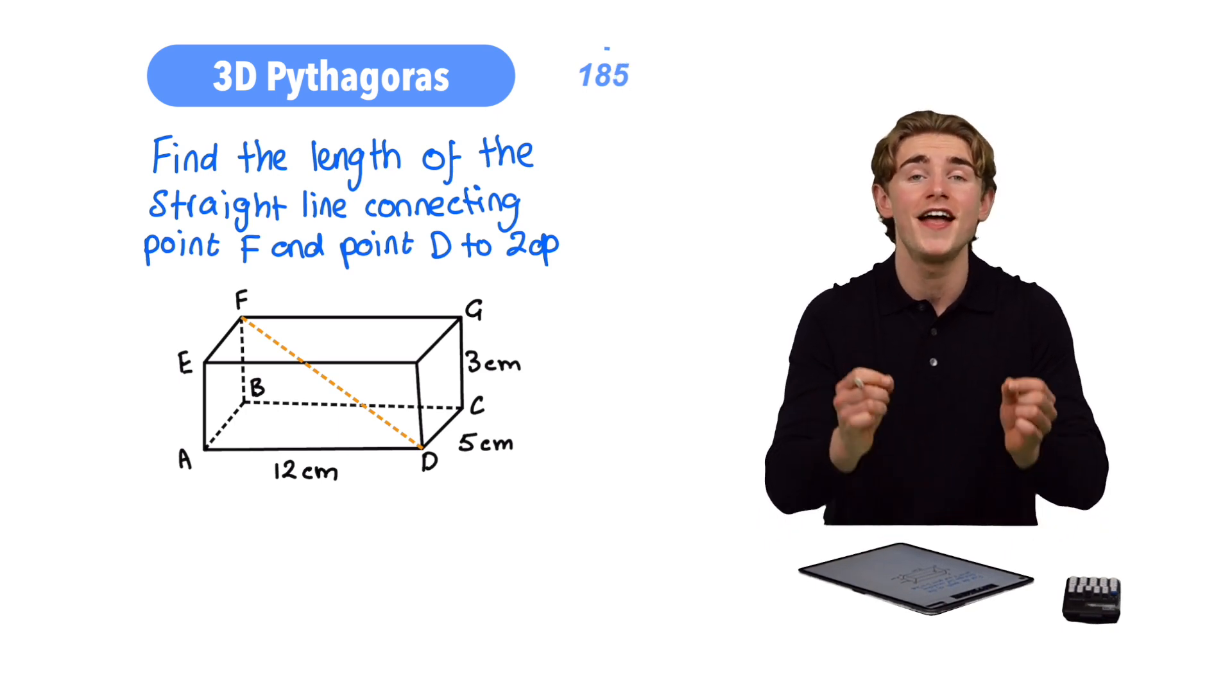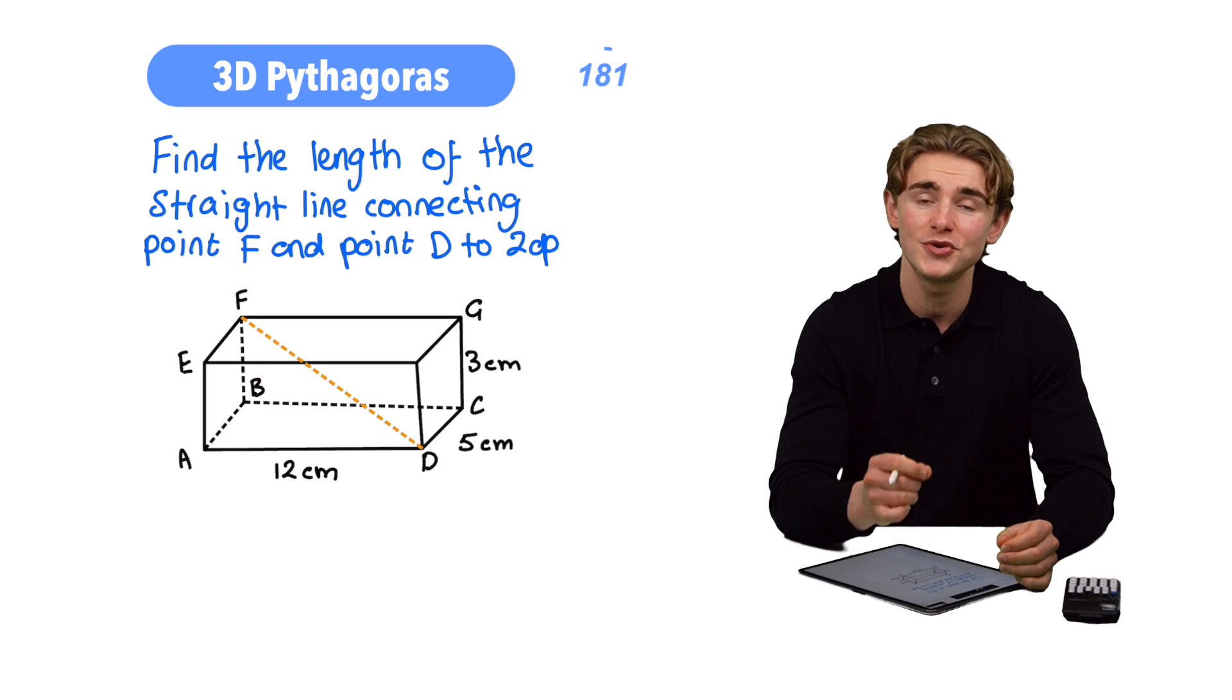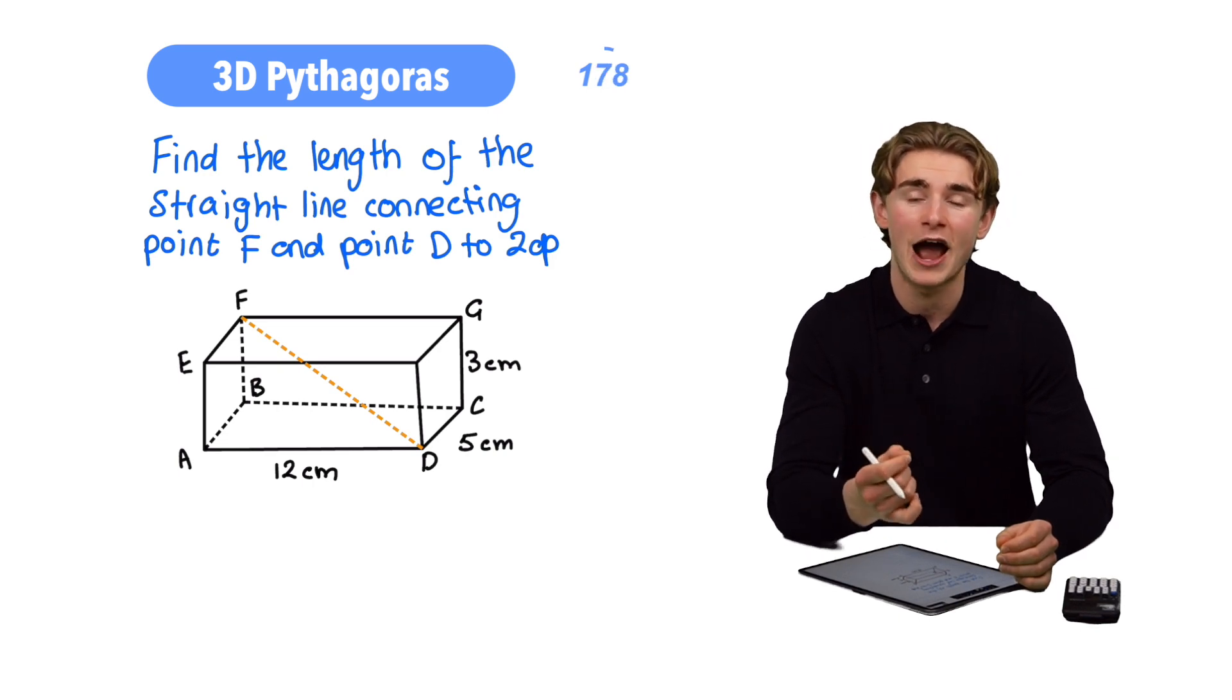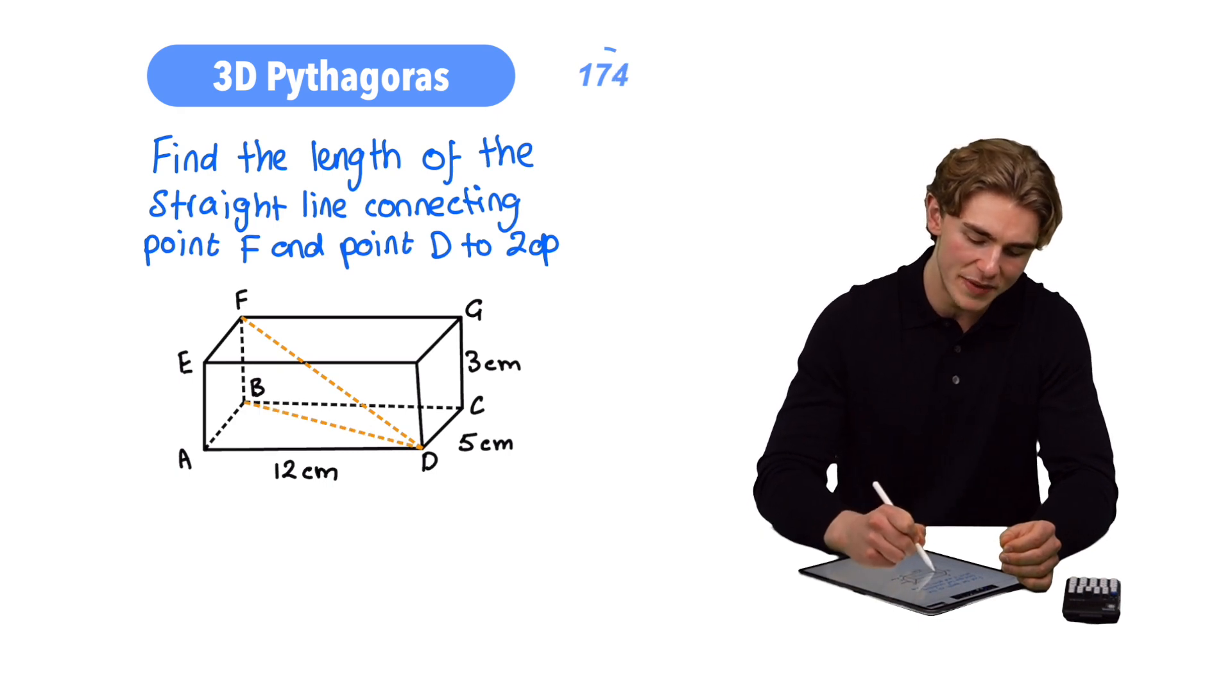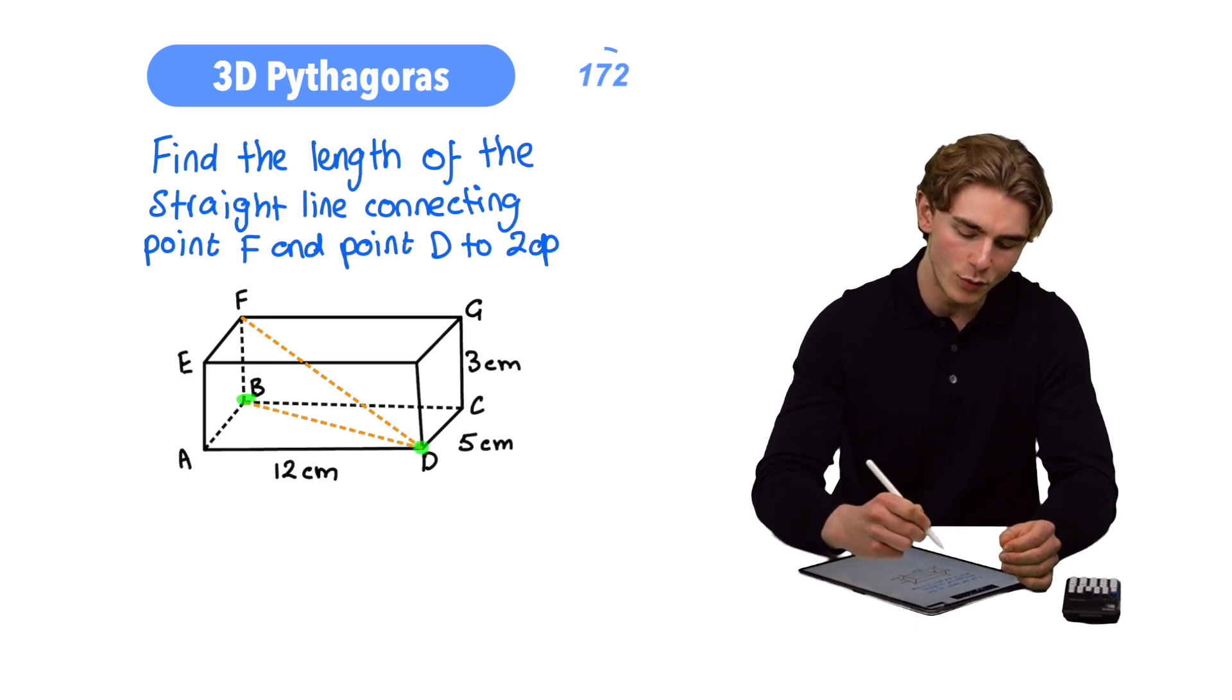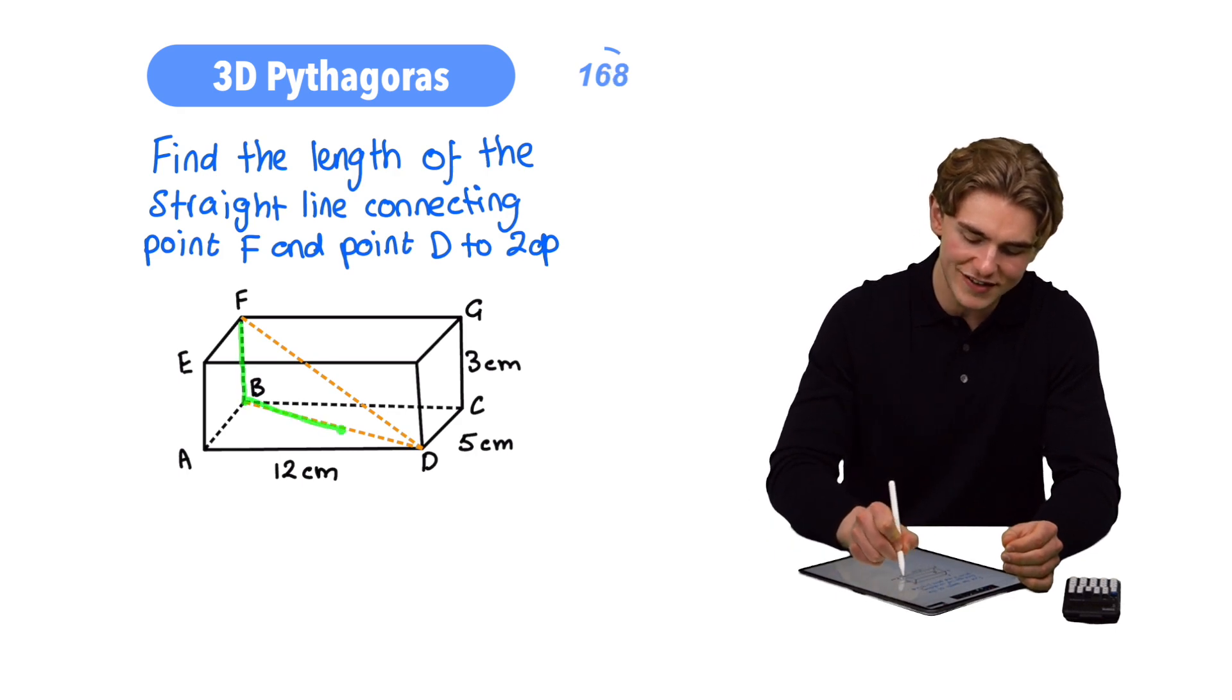When it comes to using 3D Pythagoras, what we're going to be trying to do is looking for opportunities to draw right-angled triangles in our diagram. In this case, if we draw a straight line over here connecting point B and point D, we can see that we've constructed a right-angled triangle, which is going to be that line there, FB, this line here, BD, and this line here, FD.